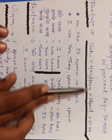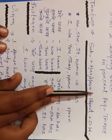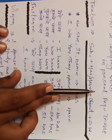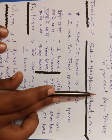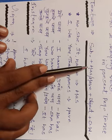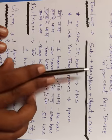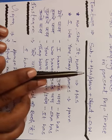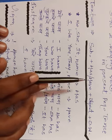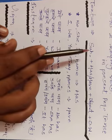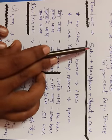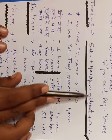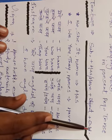Ab ek confusion hai ki has select karna hai ya have select karna hai. Yahaan par main aapko ek bahut hi pinpoint knowledge dene wala hoon. Jab bhi aapke paas koi helping verb ek selection ki roop mein aaye — jaise is, am, are — aapko decide karna hota hai. Isi tarike se has choose karna hai ya have choose karna hai. Jo cheez selection ko decide karti hai, woh hota hai iske theek pehle aane wala word — yaani subject. Subject decide karega ki has aayega ya have aayega.